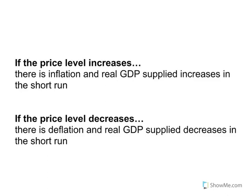If the price level increases — meaning there is inflation — real GDP supplied increases in the short-run. And that's important: in the short-run, which implies the long-run is going to be different. If the price level decreases, there is deflation and real GDP supplied decreases in the short-run. That restates the relationship we just modeled on the graph.